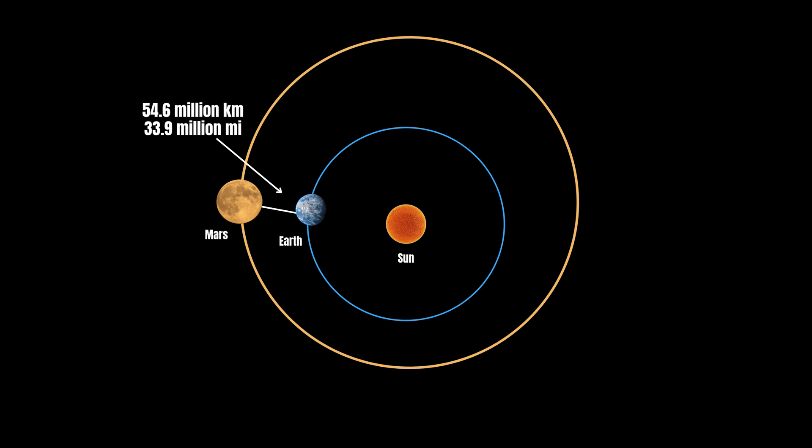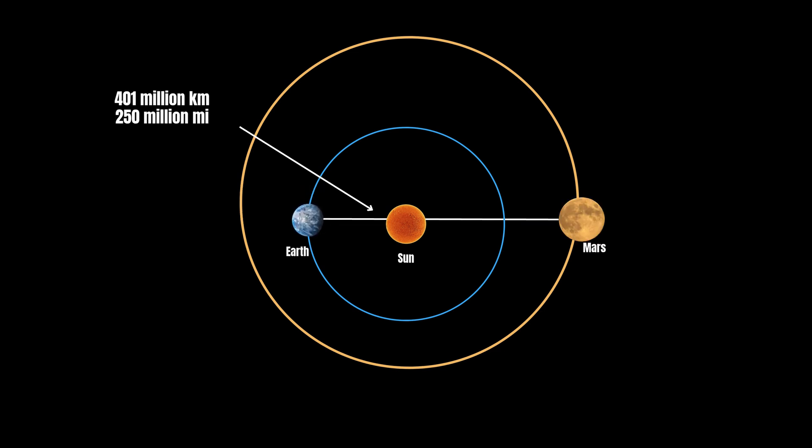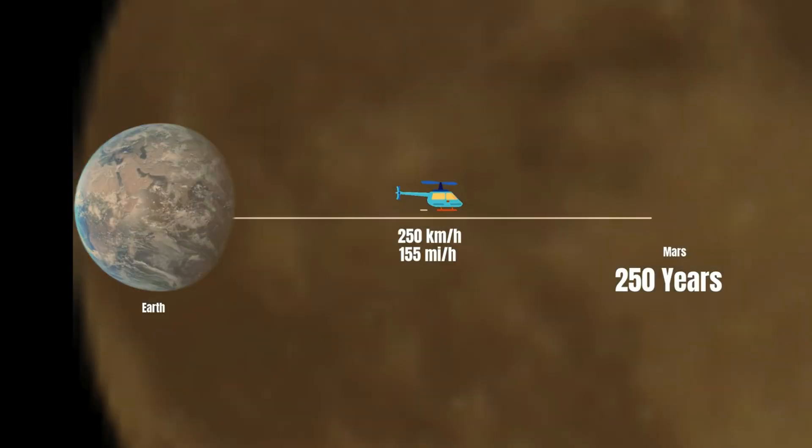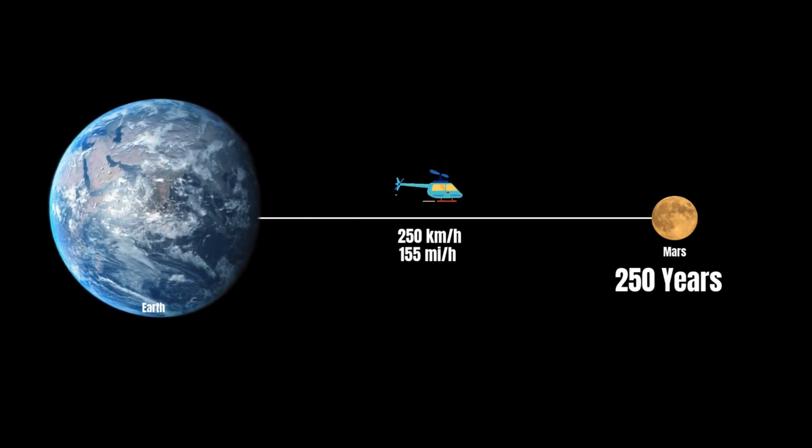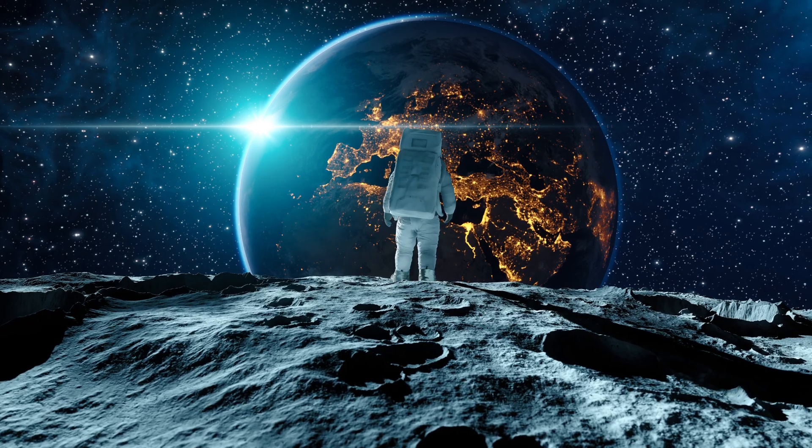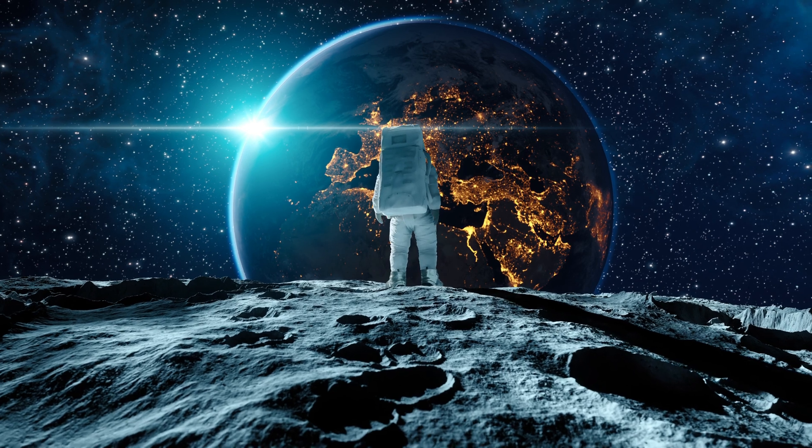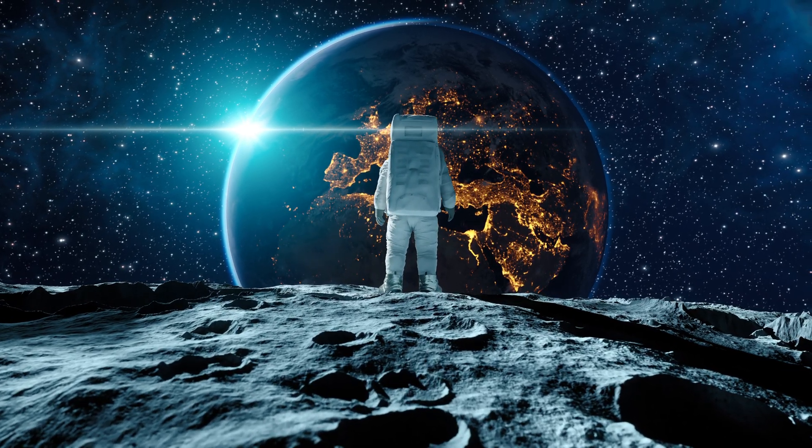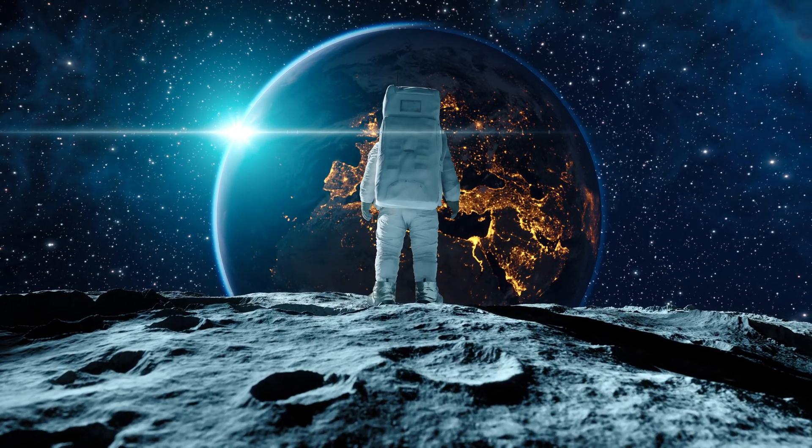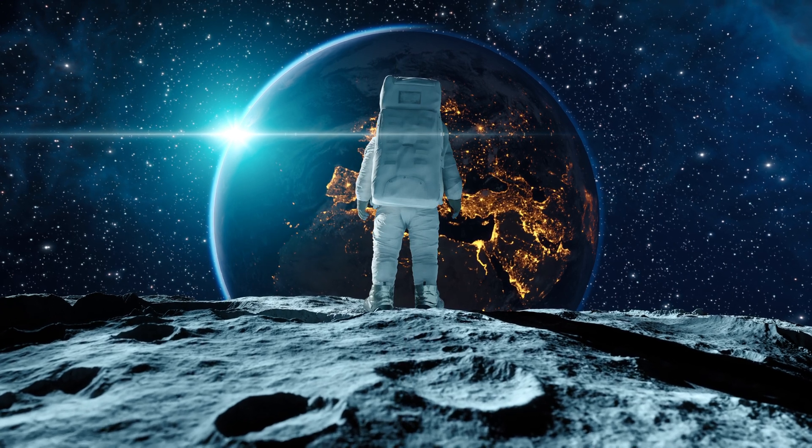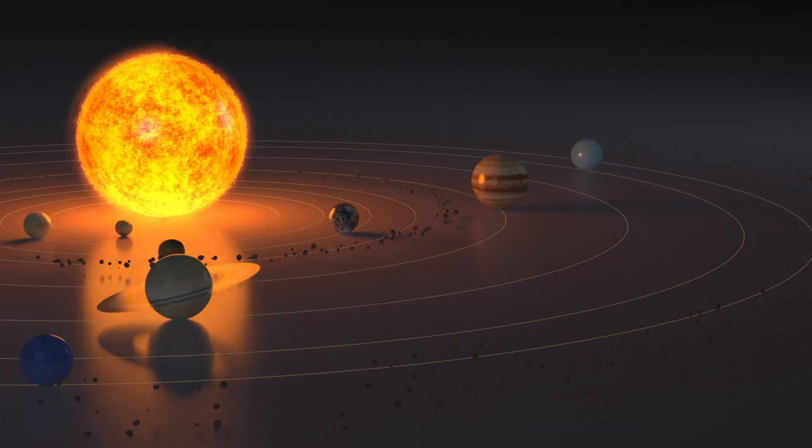At its closest approach, Mars lies about 54.6 million kilometers from Earth. However, when the two planets are on opposite sides of the sun, this distance stretches to a staggering 401 million kilometers. To put this into perspective, traveling to Mars in a helicopter flying at 250 kilometers per hour would take over 250 years. The vast expanse of space between Earth and Mars presents a major challenge for exploration.